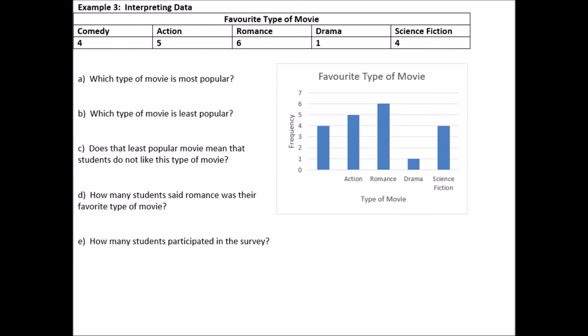So we have a chart here. It's called favorite type of movie and it's in five different categories, comedy, action, romance, drama, and science fiction. And if we take a look at the bar graph below, and we notice that it's a bar graph because the bars are not touching. And we see the categories on the bottom, right? There should be comedy here. Okay. So let's actually analyze this graph.